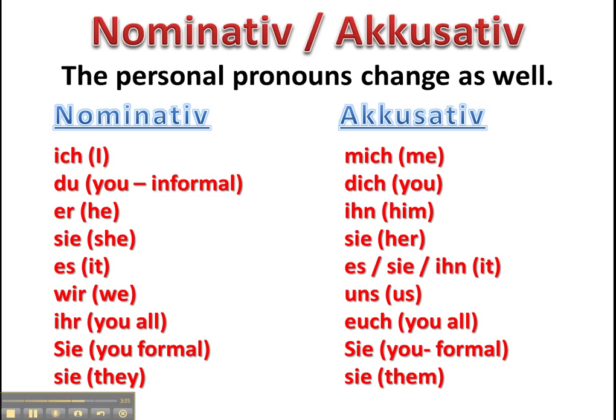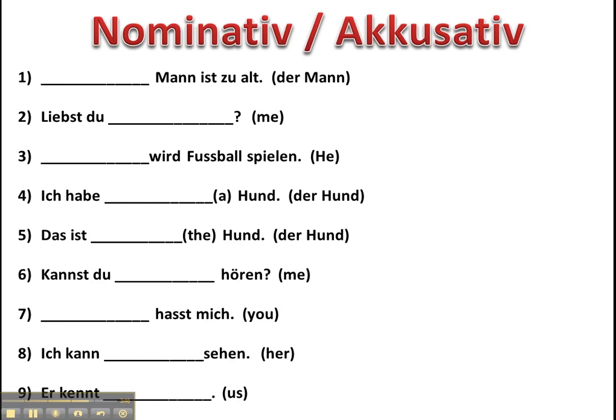Let's try a few exercises. Was würde in die Leerstelle gehen? Der Mann ist zu alt — Mann ist Subjekt, it's a subject, so it's Nominativ. Liebst du mich? Er wird Fußball spielen. Ich habe einen Hund — Hund is the direct object, it's masculine, so if we're going to use the indefinite article: einen. Das ist der Hund — this is predicate nominative. Kannst du mich hören? Du hast mich. Ich kann sie sehen. Und er kennt uns.